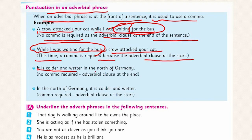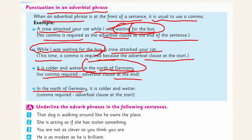'It is colder and wetter in the north of Germany.' No comma — the adverbial clause is at the end. But: 'In the north of Germany, it is colder and wetter.' — comma required because the adverbial phrase comes first.